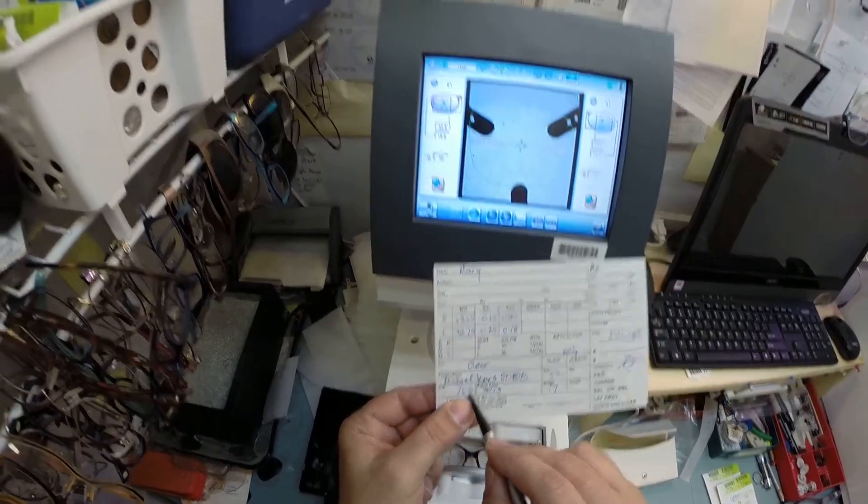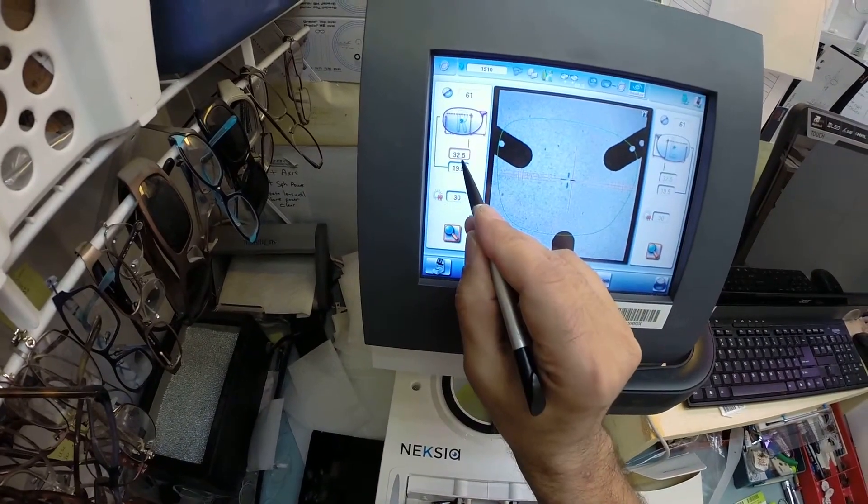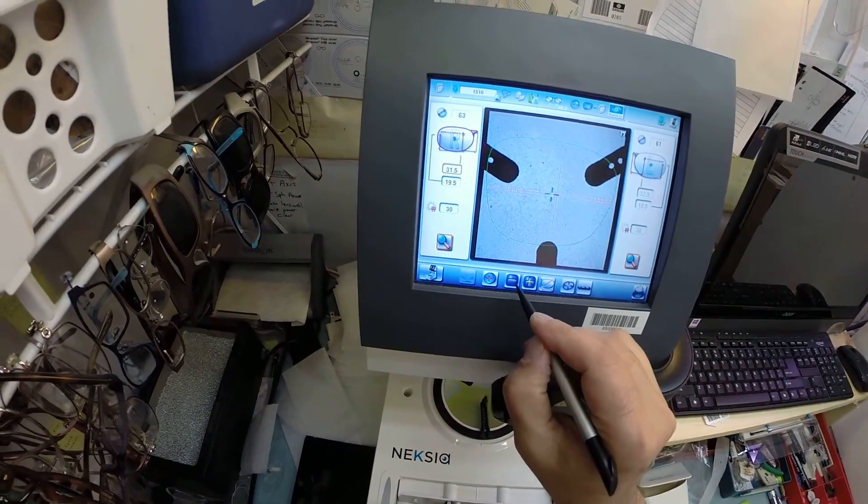So your pupillary distance is 63. The computer starts at 32.5, half of 63 is 31.5. I'm going to put that there. Let's go ahead and get your lenses prepped. I'm going to set that down for now.